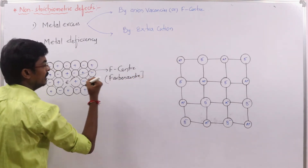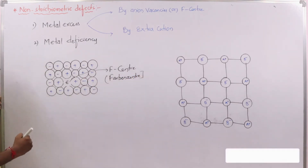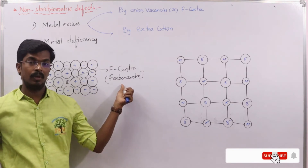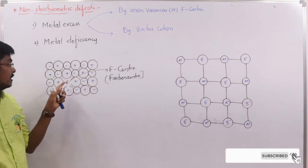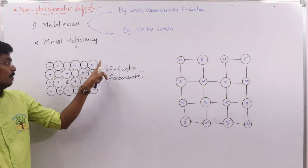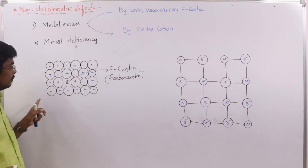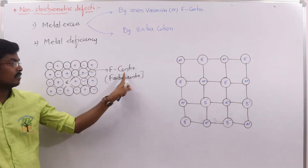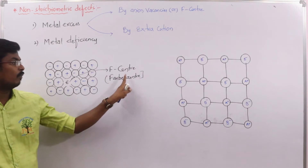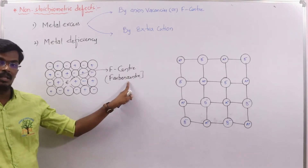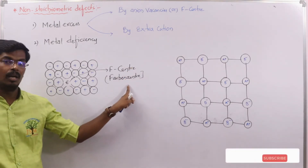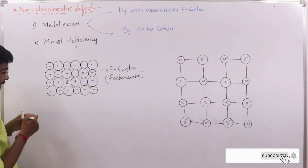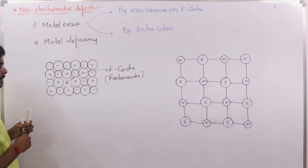This entrapped electron is called an F-center — F-center stands for Farbing center, a German word meaning color center. The Farbing center is responsible for imparting color to the crystal. So the entrapped electron, called an F-center, is responsible for giving color to the crystal.